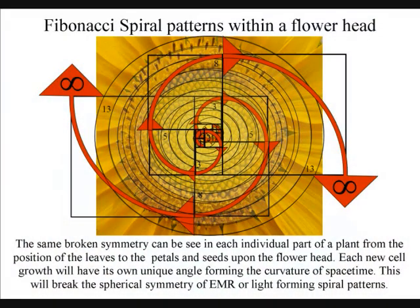This can be seen as a universal process of spherical symmetry forming and breaking. When the spherical symmetry is broken, energy levels cascade down forming the Fibonacci spirals that we can see almost everywhere in our everyday life.